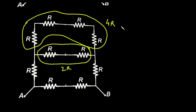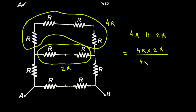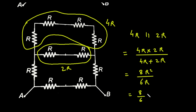Now let's simplify this. It will be 4R parallel with 2R. So, 4R multiplied with 2R divided by 4R plus 2R, which gives 8R² divided by 6R, which simplifies to 8/6 × R.